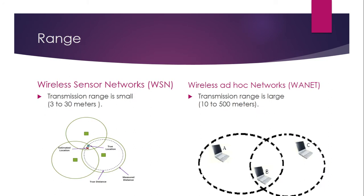The range of wireless sensor networks is small — 3 to 30 meters — while in wireless ad-hoc networks it's 10 to 500 meters.